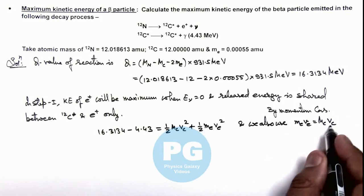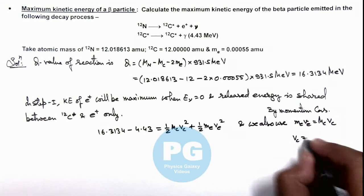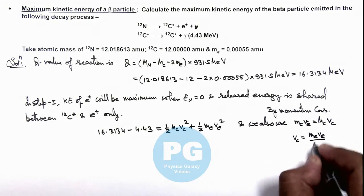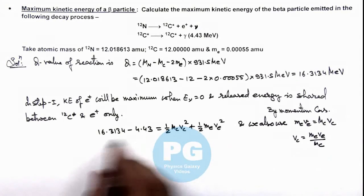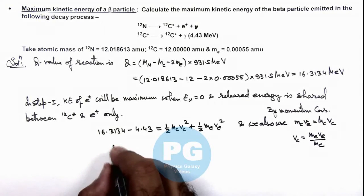From where we get the value of vc, which is written as meve divided by mc. If we substitute this value in this reaction, you can see this gives 11.8834.